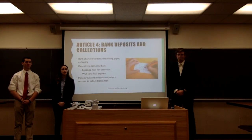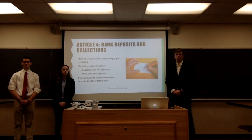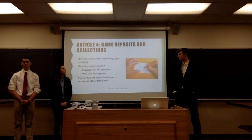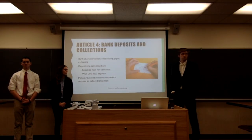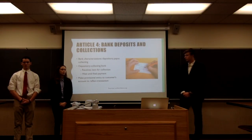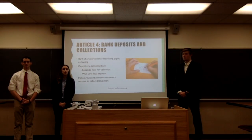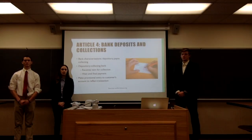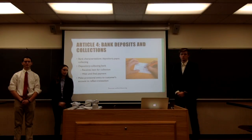Article 4 deals with bank deposits and collections, defining a bank as any person who deals in the business of banking. There are several bank characterizations: the depository bank is where the item starts; the payer bank is where the item will be withdrawn; and the collecting bank is where the item will be collected. When a depository or collecting bank receives an item for collection, they don't normally advance cash right away — they wait for final payment from the payer bank. Exceptions occur when the account is known to have enough money to offset the balance if the check doesn't clear, or when there is a long-standing trust relationship with the customer. Provisional entries are made into the customer's accounts to reflect any transaction.